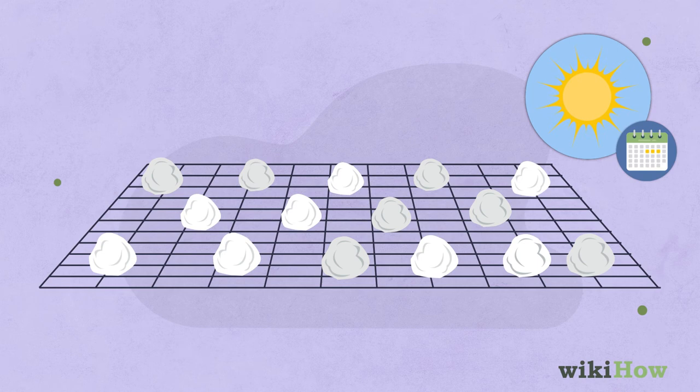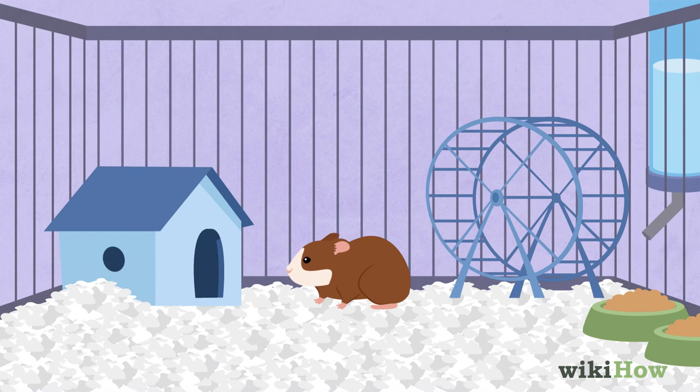Once the paper balls are completely dry, break them apart and spread them on the bottom of your hamster's cage.